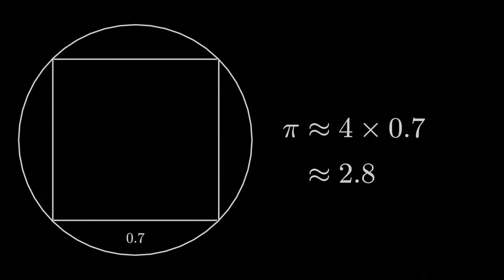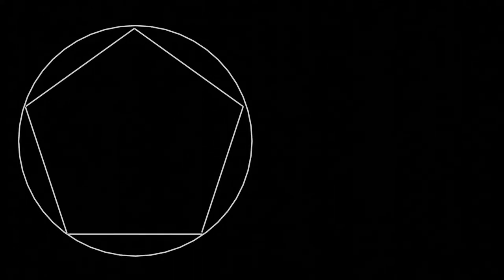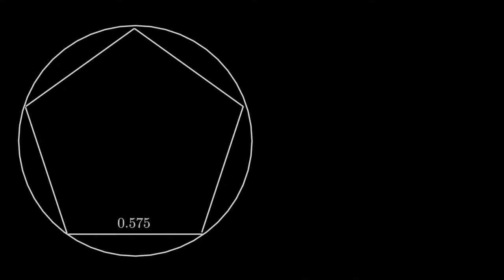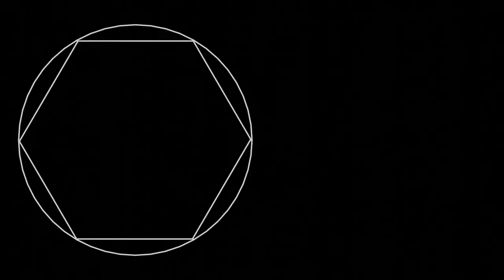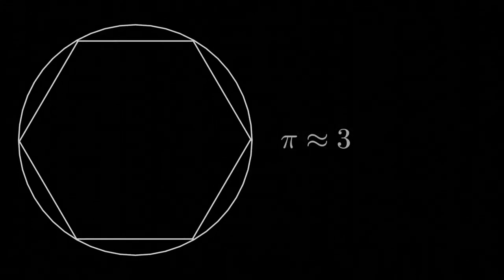Moving up to a pentagon, a 5-sided polygon, we get side lengths of roughly 0.575, making pi approximately 2.875. At the hexagon, we finally reach an approximation of about 3.